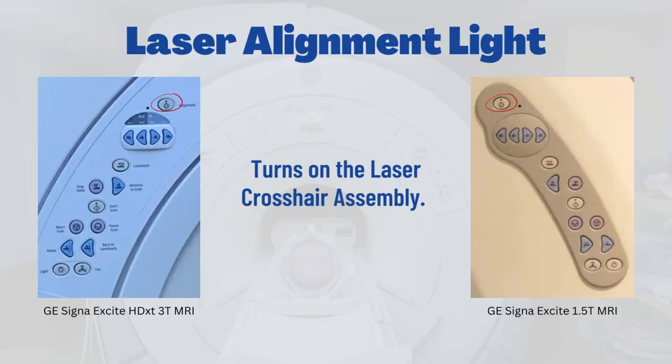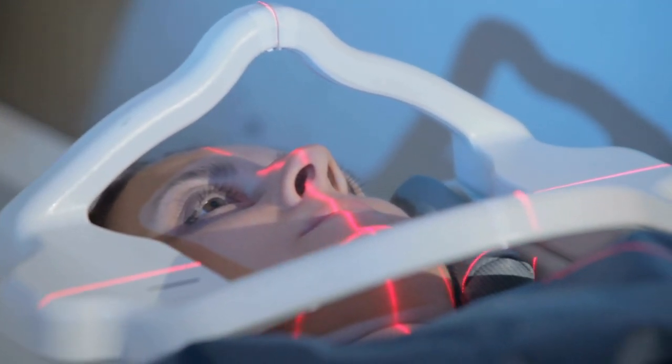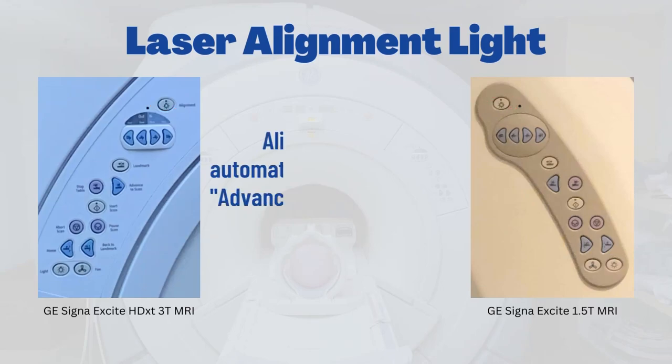The button at the top of the control panel powers the laser alignment light. This laser crosshair assembly allows for precision landmarking over the anatomical region of interest.